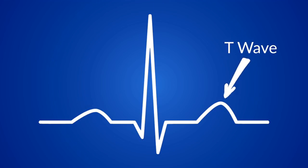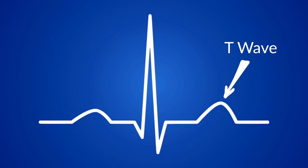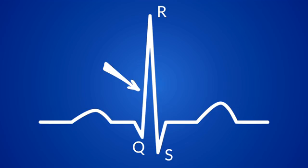Lastly, we have the T wave. After depolarization, we have repolarization. When the ventricles repolarize, we see the T wave. First depolarization happens, which causes contraction; then repolarization happens, which causes relaxation. You're probably wondering why we don't see the repolarization of the atria on the EKG. It does happen, but the repolarization of the atria occurs while the ventricles are depolarizing, so it gets overshadowed by the much larger QRS complex and we don't see it on the graph.